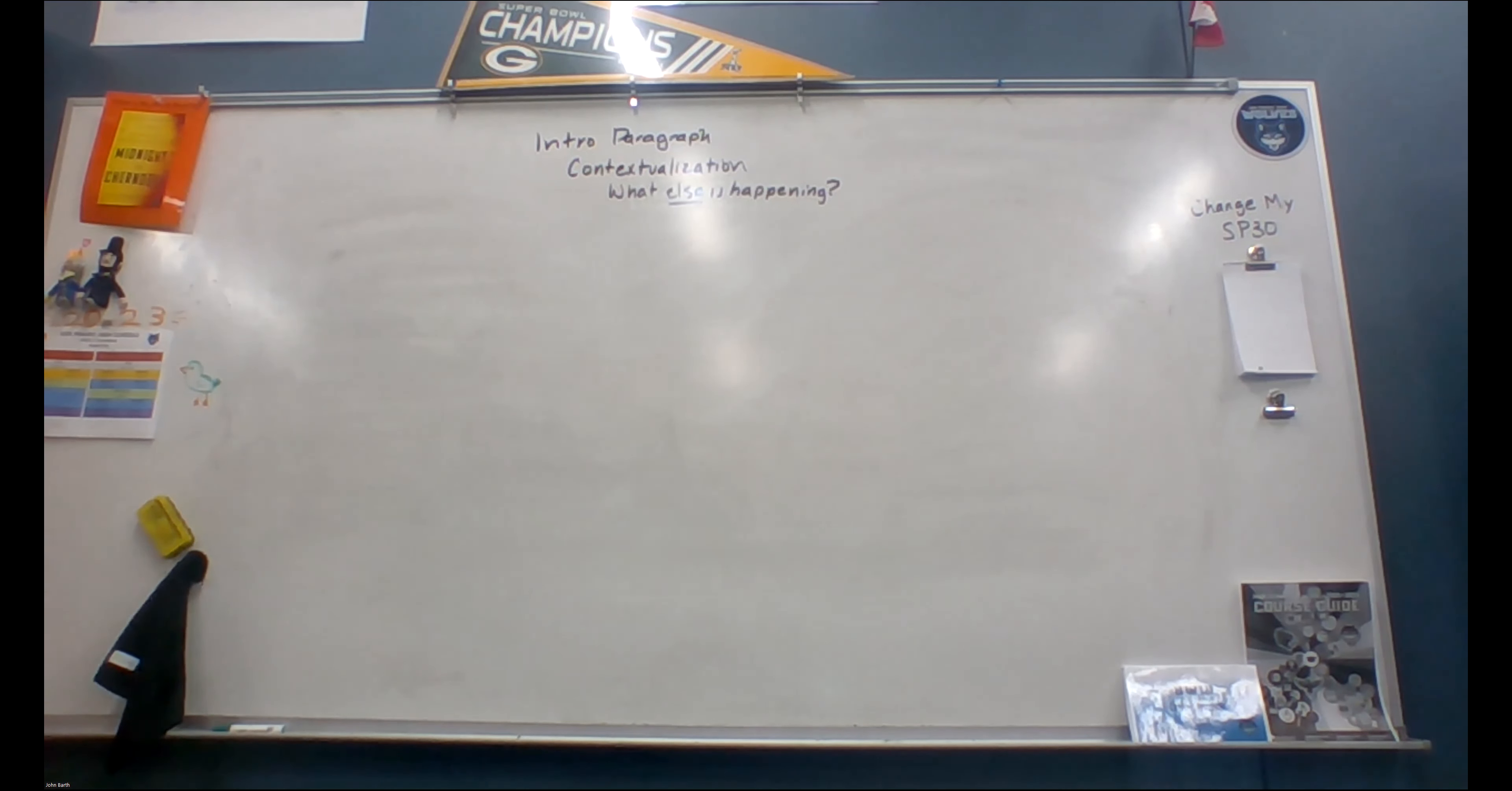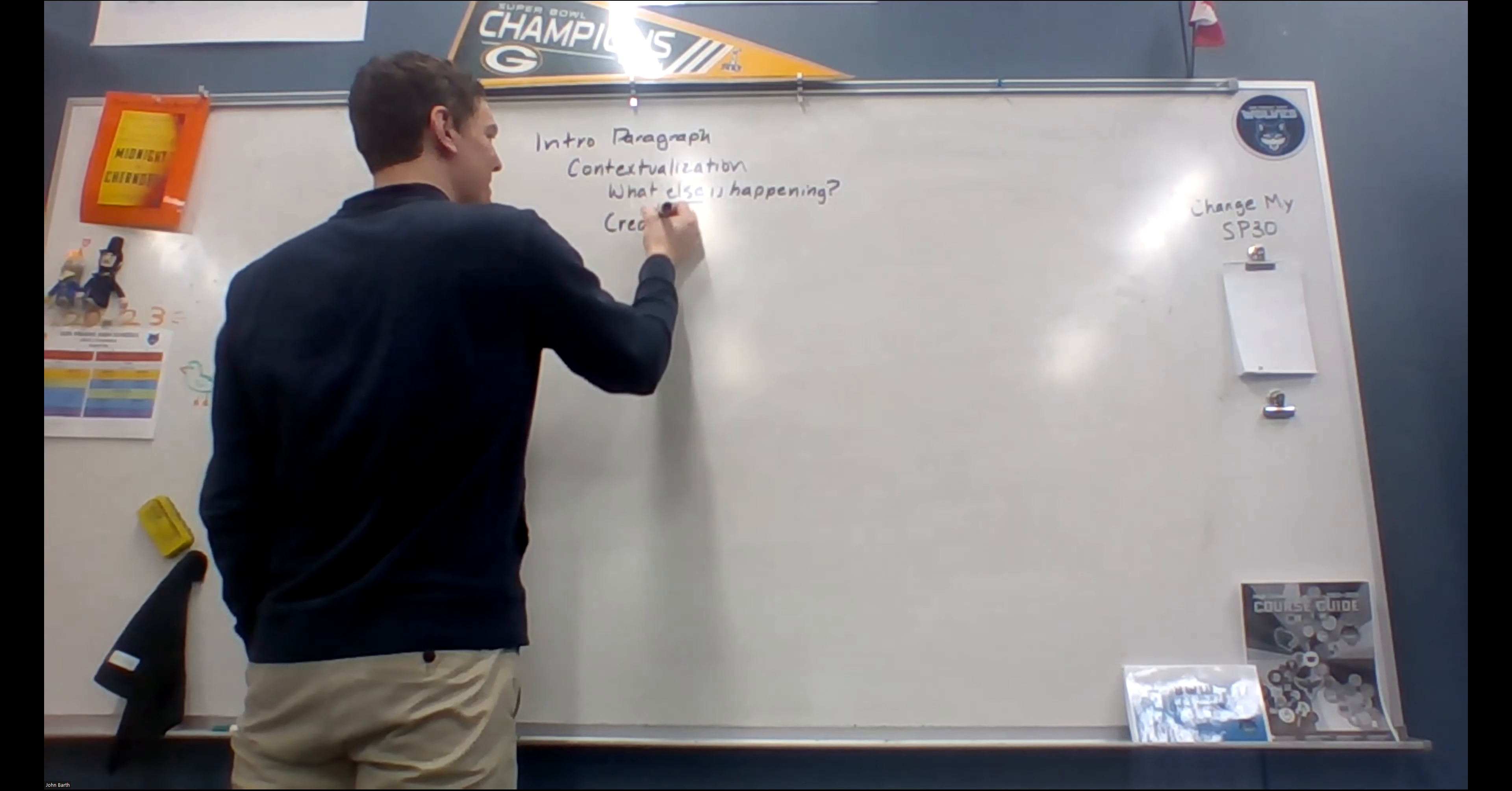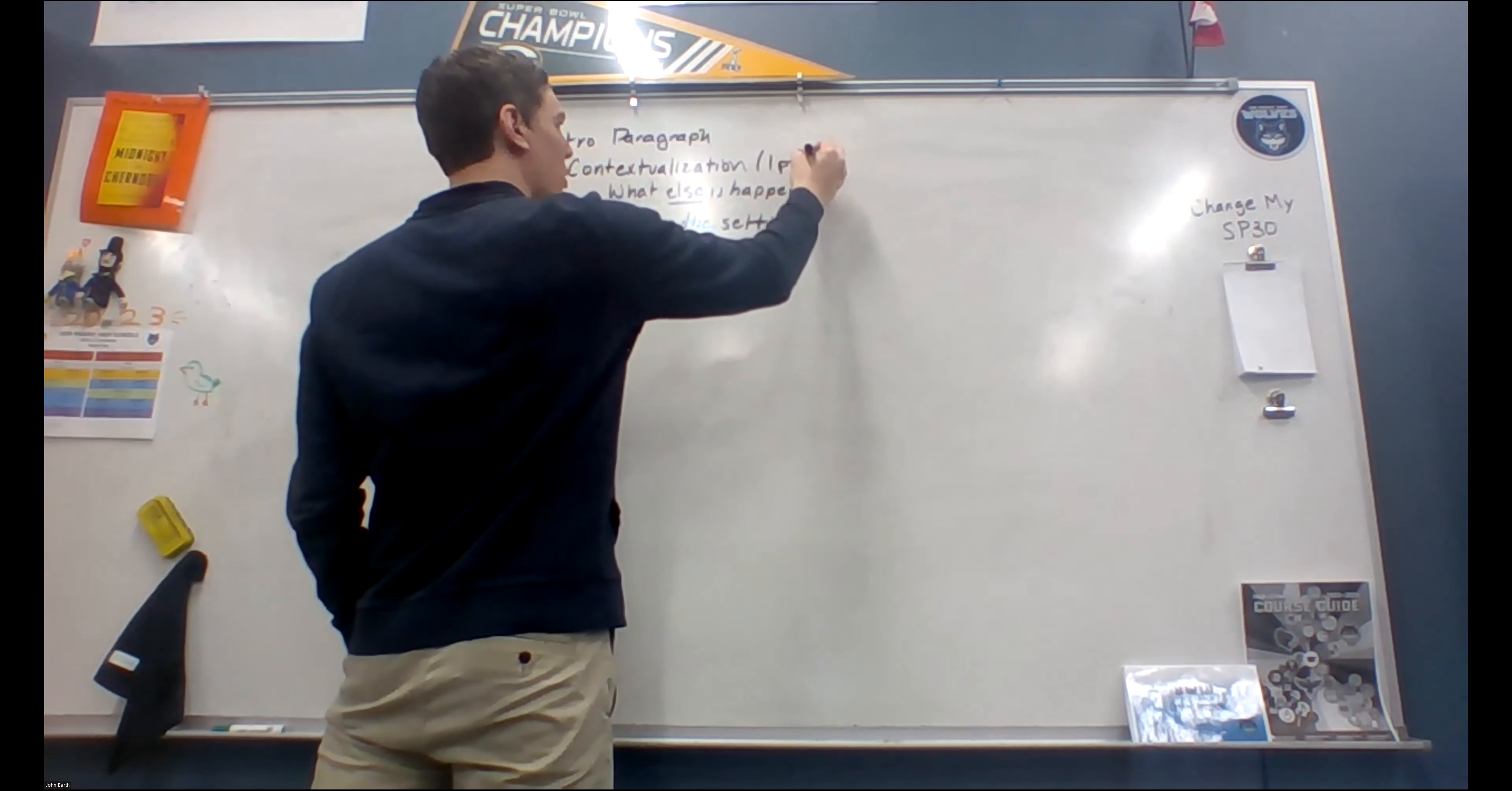I underlined the word else because we don't necessarily want to talk about the focus of the essay. We want to talk about what else is going on. So if the question is asking us about our foreign policy, let's say during World War Two, and how we fought the war, the what else could be like what's happening in the United States, how the home front changes over those few years. So we want to kind of focus on what else is happening. We're trying to create the setting for the reader. Usually this is about three sentences. It begins the paragraph, and this is worth one point.